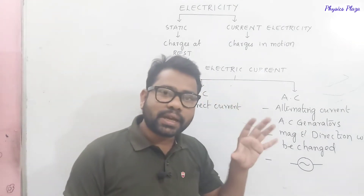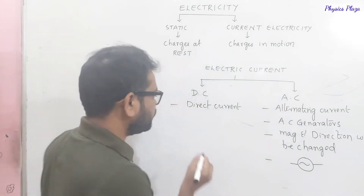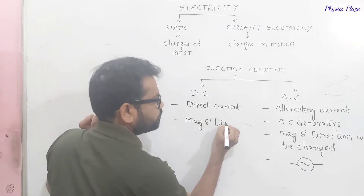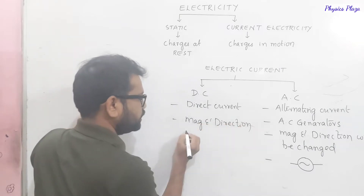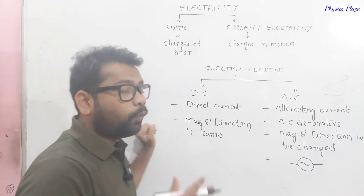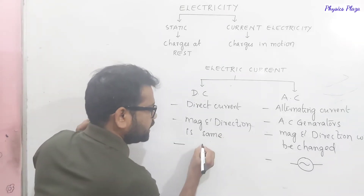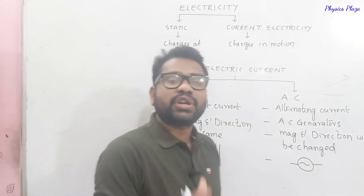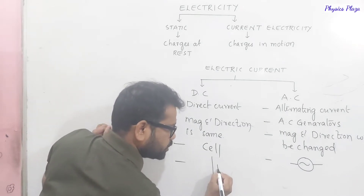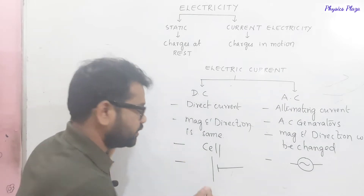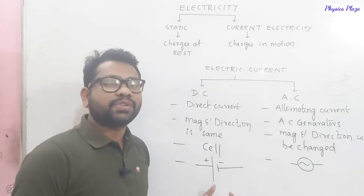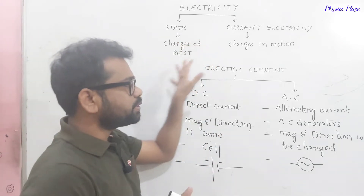Now, direct current: magnitude and direction remain the same, it won't change till the end. The source of DC current is cells. A cell is a device which converts chemical energy into electrical energy. Its symbol is two straight lines — one long representing the positive terminal and one short representing the negative terminal. These are the types of electric currents.